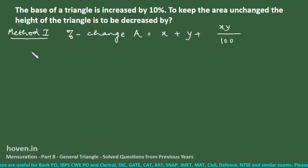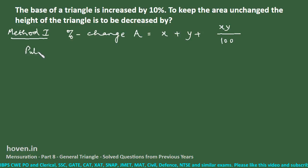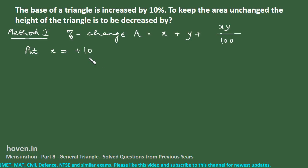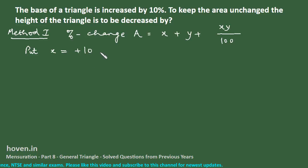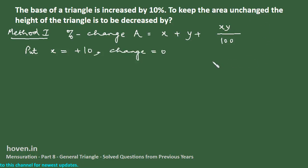In this case, we put x equal to +10 because there is an increase of 10% in the base of the triangle. The percent change in area is set equal to 0, because the area has to remain unchanged. We have to find the value of y.